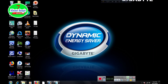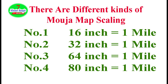Viewers, now I am discussing some important issues — that is the relation between moza map length and actual size length. There are different kinds of moza map scaling available in our Indian subcontinent, such as in India, Pakistan, and Bangladesh. There are four kinds: 16 inches equal to one mile, 32 inches equal to one mile, 64 inches equal to one mile, and 80 inches equal to one mile. In rural areas, 16 inches equal to one mile is most popular, and 64 and 80 are basically used in urban areas. The 16 inch equals one mile scaling is the standard for land measurement.